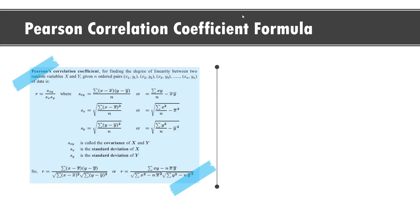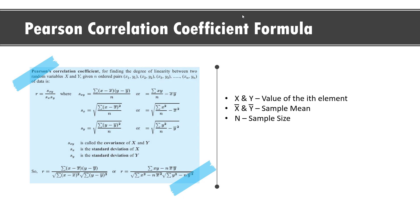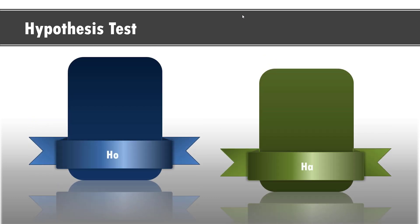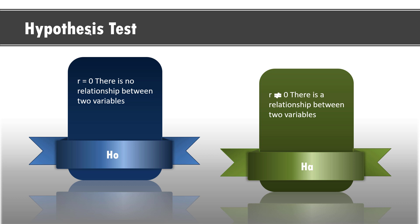One can easily calculate the Pearson correlation coefficient using this formula. It is the covariance of x and y divided by the standard deviation of x and y. X and y here is the value of the i-th element in the dataset. X-bar and y-bar are the sample mean, and n is the sample size. In practice, it is often of interest to test the hypothesis. The null hypothesis is that r equals 0, meaning there is no relationship between the two variables. The alternate hypothesis is that r is not equal to 0, and there is a relationship between two variables.